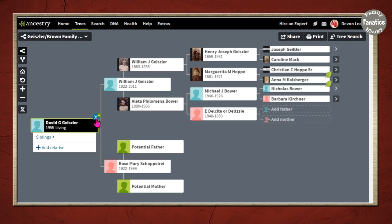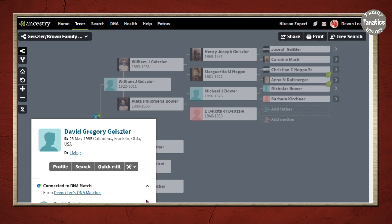then Ancestry takes me right to where he's located on my family tree. I can also see that there's a DNA icon right there.